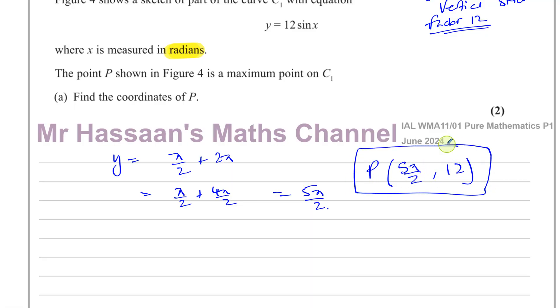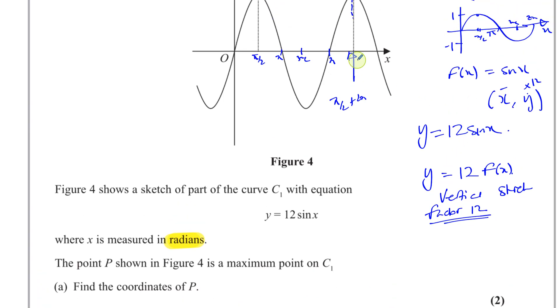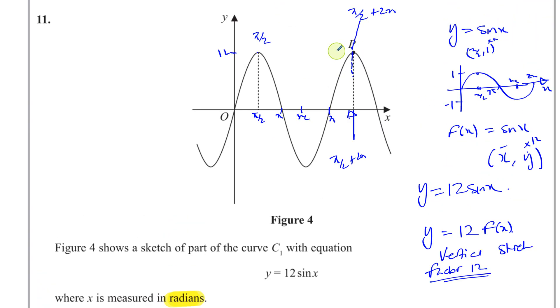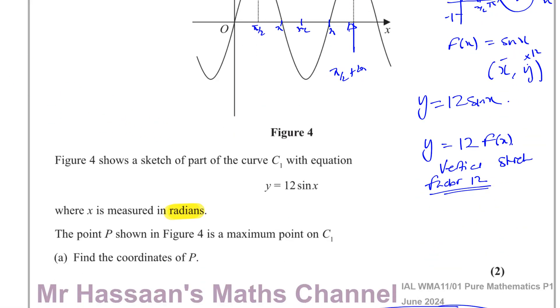So the coordinates of P are 5π over 2 and 12. The x coordinate won't change due to the stretch, but the y coordinate is multiplied by 12. That's the answer for part 11a — just a simple vertical stretch transformation.